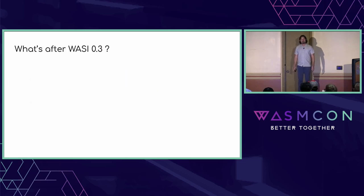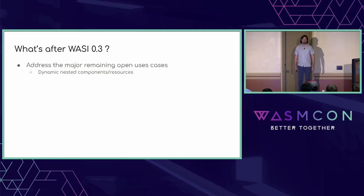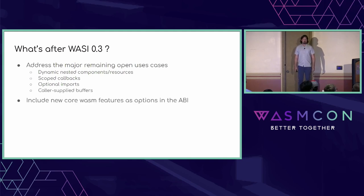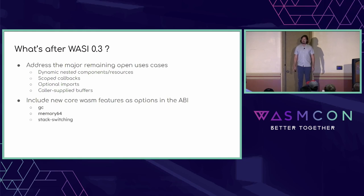After 0.3, things are fuzzier, but the important focus is addressing major remaining open use cases. There's a cluster around dynamic nested components and resources, scoped callbacks, optional imports, and caller-supplied buffers. There are also new core WASM features to adopt into the ABI: WASM GC is already shipping in browsers; Memory64 just made it to stage four and should ship in browsers soon; stack switching is receiving a lot of active work from browsers; and shared everything threads is really cool — whenever it's ready, we should integrate with that too.